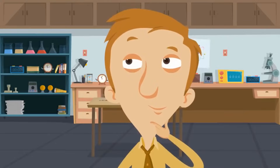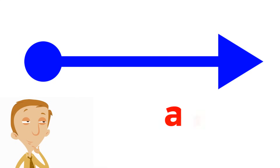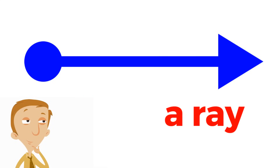What about a ray? What does a ray look like? Well, a ray is kind of a combo, a combination of the two. You can see it right here. A ray has an arrow on one end, making it like a line on that side.